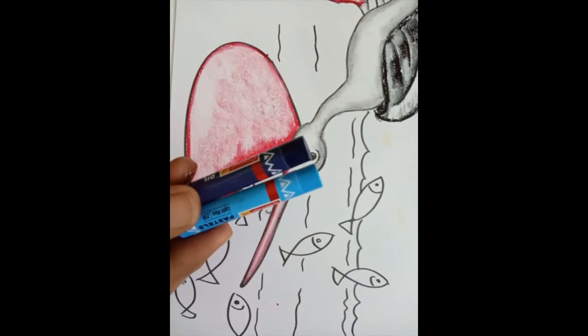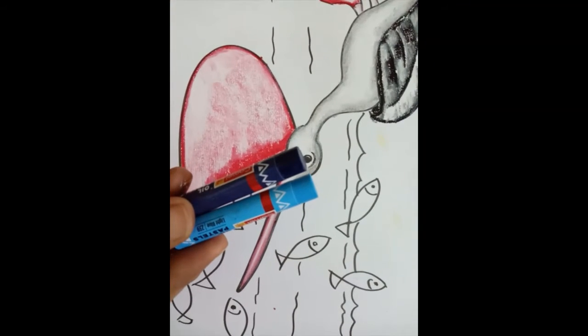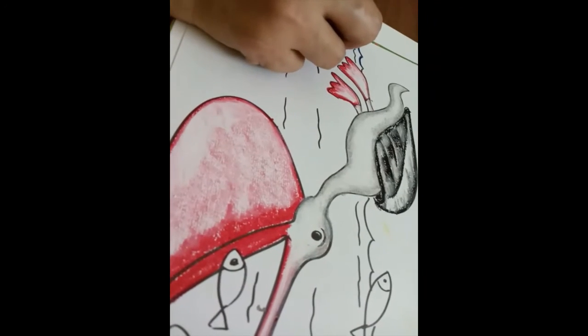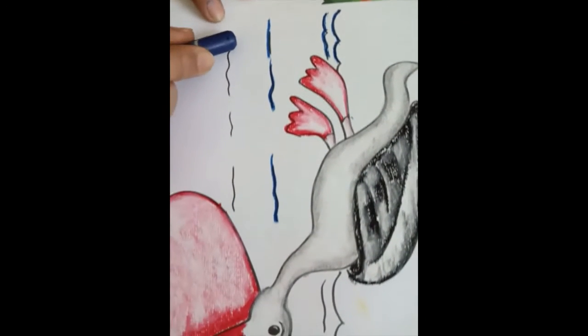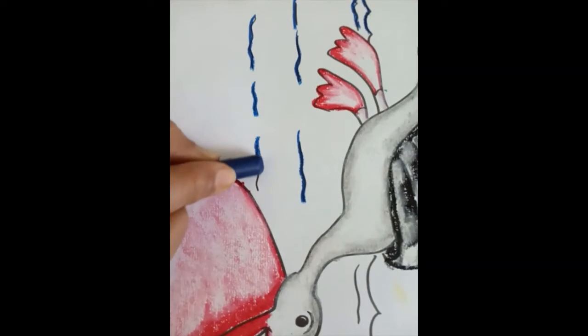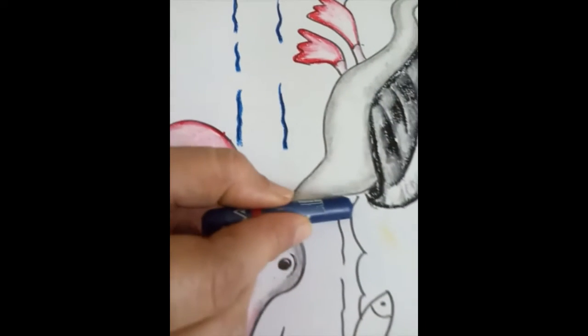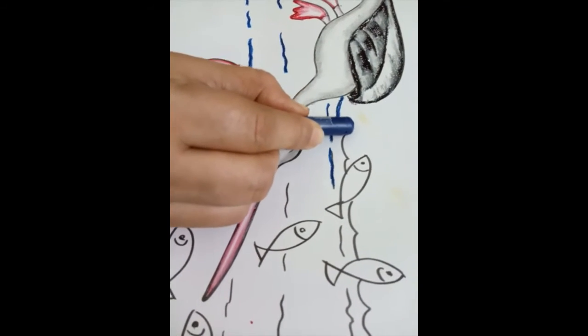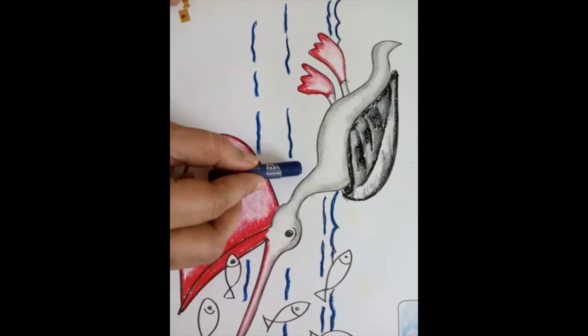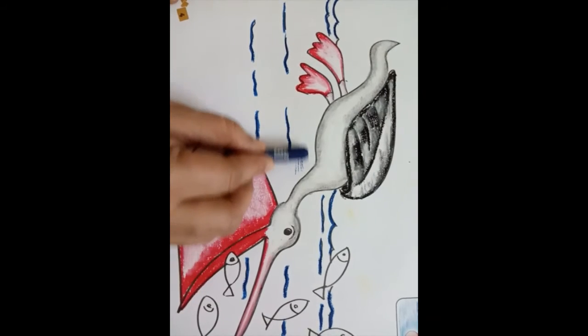To color the water body we will be using dark and light blue. Starting with dark blue. Next we will make light strokes, color in the same color.